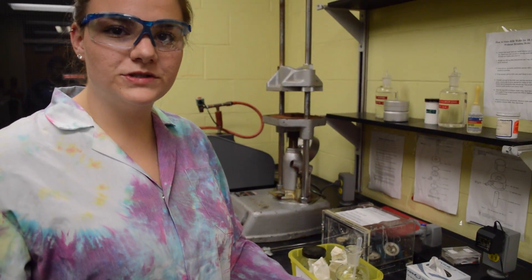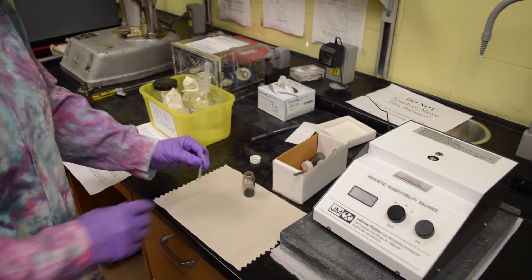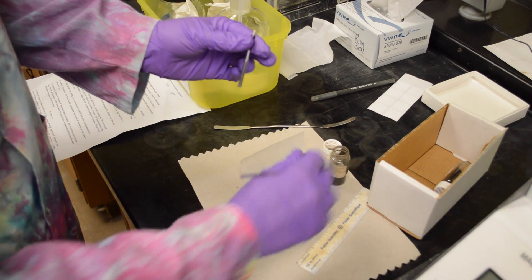Put your sample in the pre-weighed tube and tap it on the counter until it is compact. To put the compound in the tube, there are two methods that you can use.